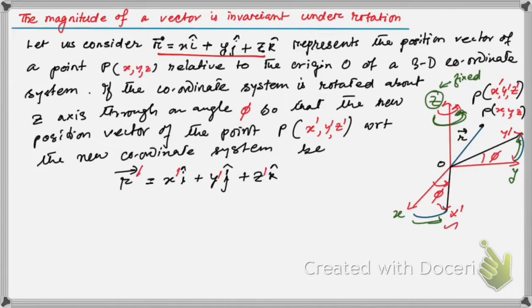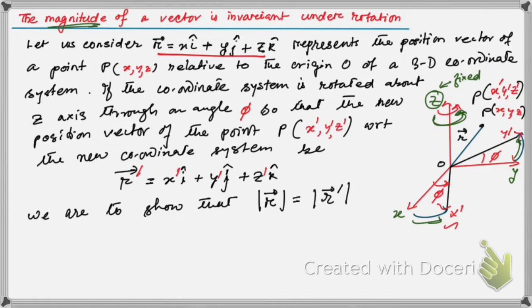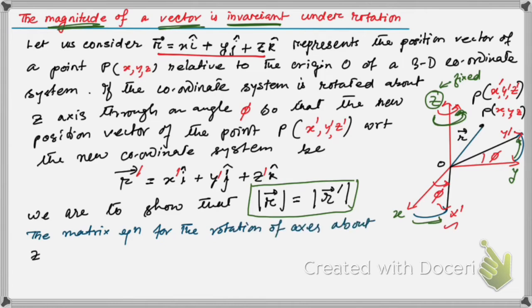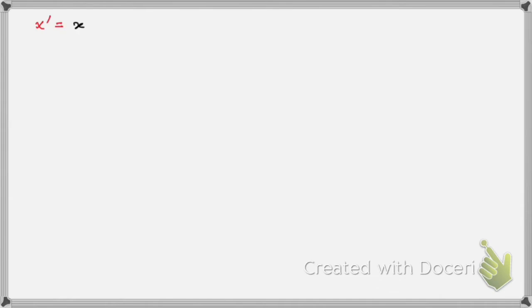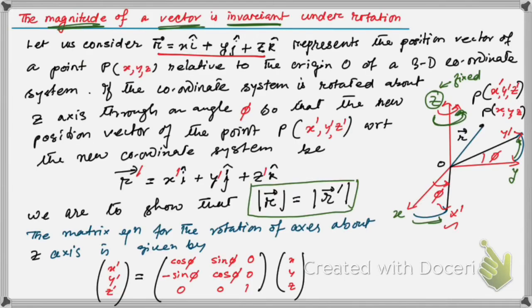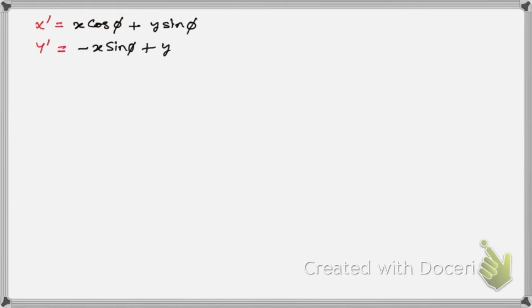We have to show that the magnitude of r vector equals the magnitude of r-prime vector — that is the first property. We know that the matrix equation for rotation of axes about the z-axis is: [x', y', z']^T = [[cos φ, sin φ, 0], [-sin φ, cos φ, 0], [0, 0, 1]] · [x, y, z]^T. From this transformation equation we can obtain x-dash, y-dash, and z-dash. Z-dash is simply z because it is fixed.